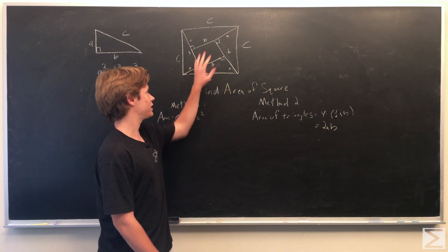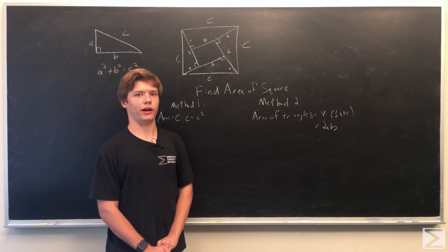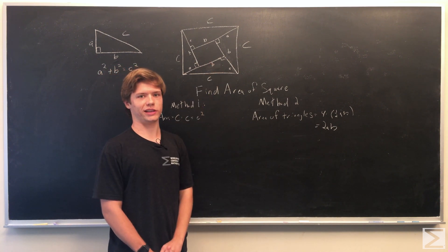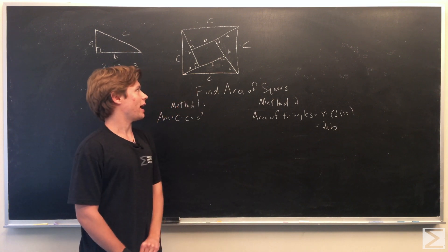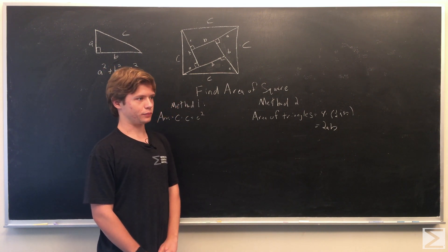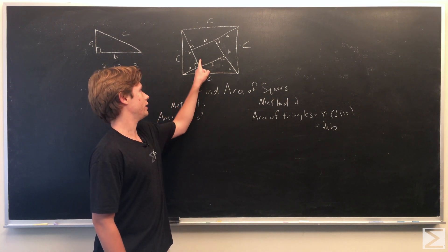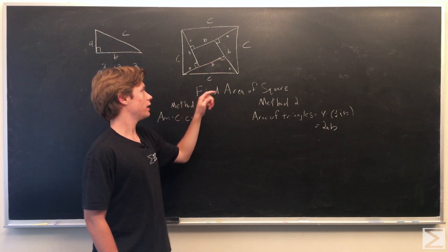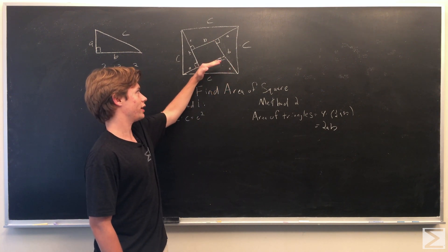So when we figure out this we need to figure out the area of the quadrilateral inside. As you can see from the diagram these are all right angles because they're all on lines and we've proven that these are right triangles.